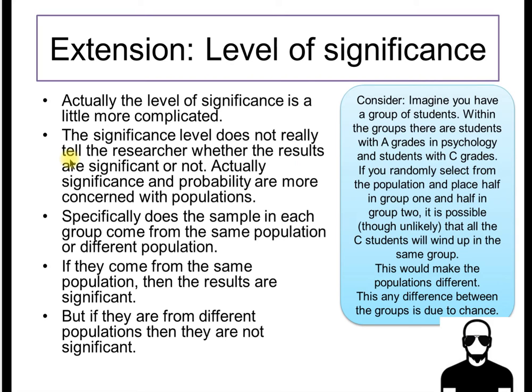What we're really doing with significance is we're really saying, does the sample that we've selected represent the population? Or did that sample occur by chance? One way of looking at this is, imagine a group of students. Within the group of students, there are students with A grades and students with C grades. If I randomly select from all my students in psychology and put 10 students in one group and 10 in another, it is possible, though unlikely, that all 10 in group A are A star A students and all 10 in group B are C students.